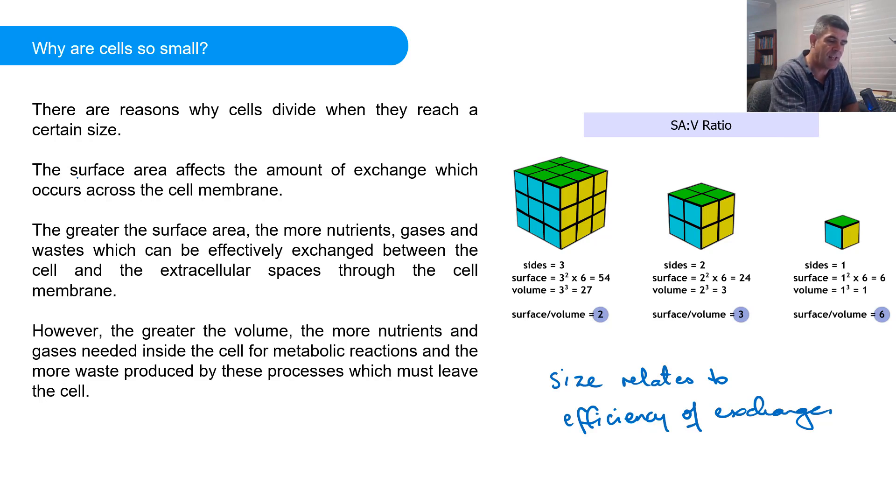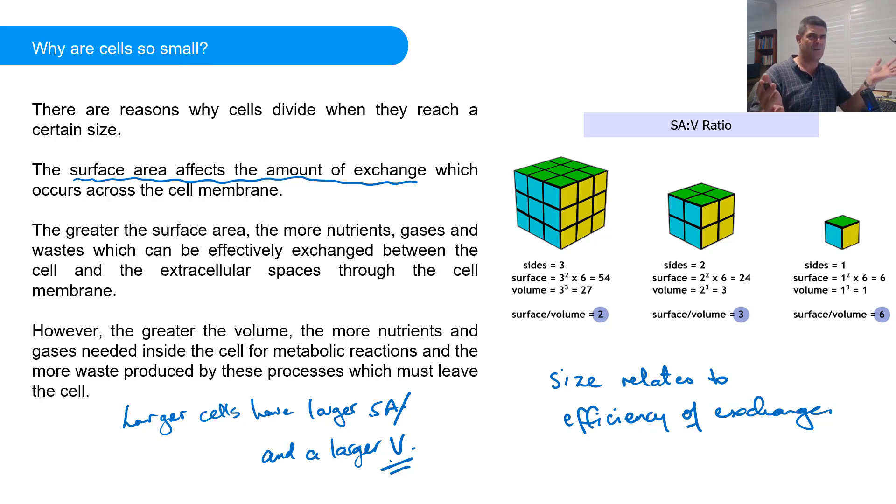The most important thing is the surface area affects the amount of exchange which can occur across the cell membrane. And what makes sense is that as you get bigger, you get more surface area. So larger cells have larger surface areas. So this sounds like a good start. If we want material exchanged across the surface, then being bigger is good because we have a bigger surface area. But the problem is that as objects get bigger, like cells get bigger, their surface area gets bigger, but their volume also gets bigger. And a larger volume, it's this larger volume that's the problem. Because the rate of increase of surface area is not as great as the rate of increase of volume. And what that means is that the surface area to volume ratio gets smaller.